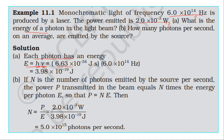Planck's constant h is 6.63×10⁻³⁴ joule-second, and frequency is 6×10¹⁴ Hz. The seconds cancel, giving the answer in joules. So 10⁻³⁴ times 10¹⁴ equals 10⁻²⁰. Therefore 6.63×6 gives 39.78, so the energy of each photon is 3.98×10⁻¹⁹ joule.